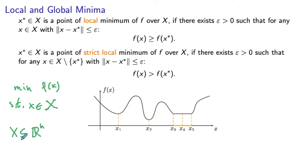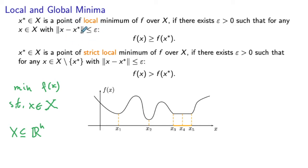So this set X is a subset of R^n that contains our feasible points. Now, how do we define a point of local minimum? A point x star in X is a point of local minimum of f over the set X if there exists some epsilon greater than zero such that for any x in X with distance at most epsilon from x star, we have f of x greater than or equal to f of x star.